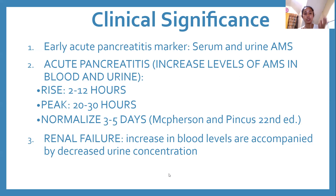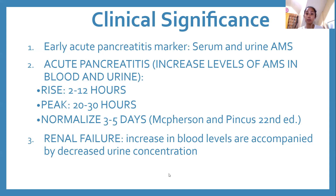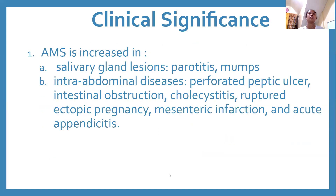In renal failure, there is increased amylase in blood levels but decreased amylase in the urine, since the kidney is unable to filter out amylase. Amylase is very non-specific because it can also increase in cases of parotitis.